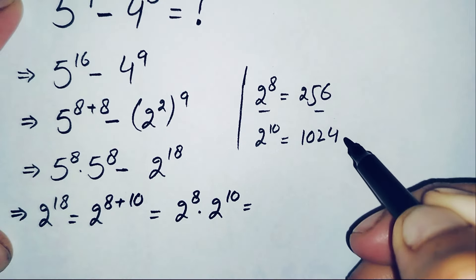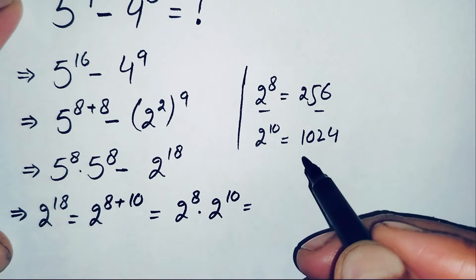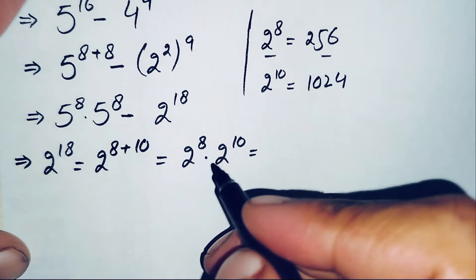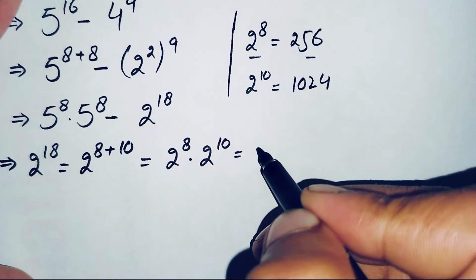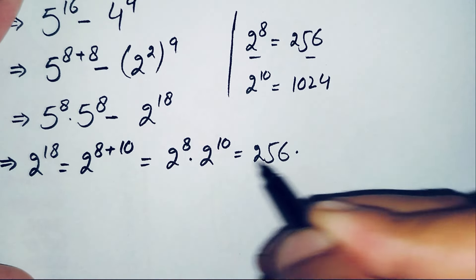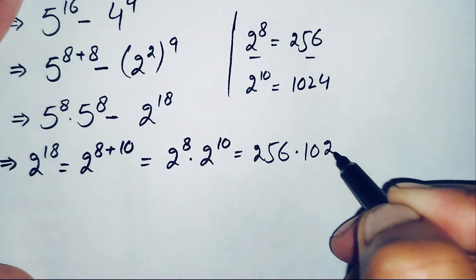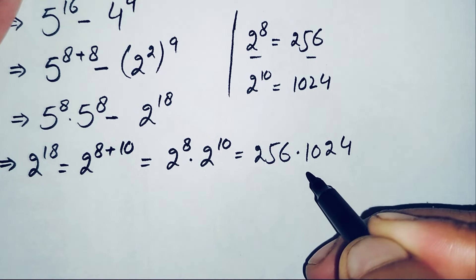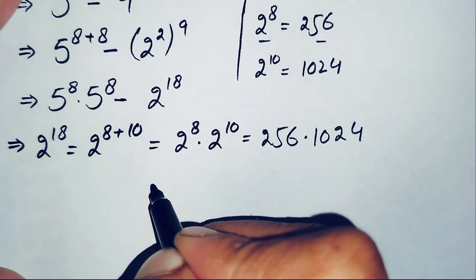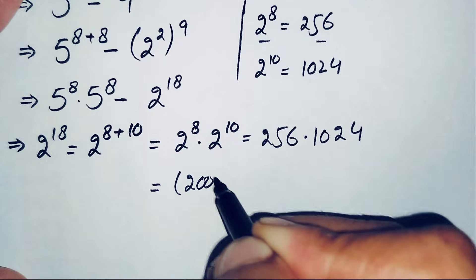The value of 2 raised to power 10 is the very famous number 1024. So we replace these two values: the value of 2 raised to power 18 becomes 256 times 1024. To multiply these two numbers we can write 256 as 200 plus 50 plus 6, times 1024.